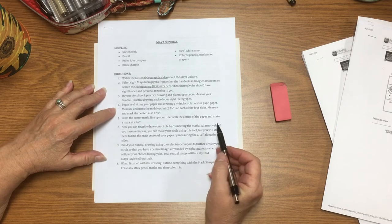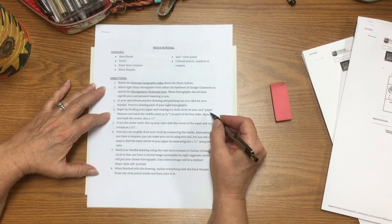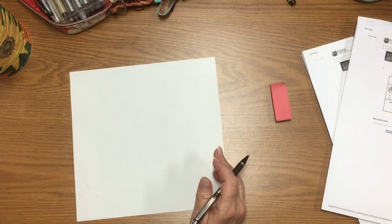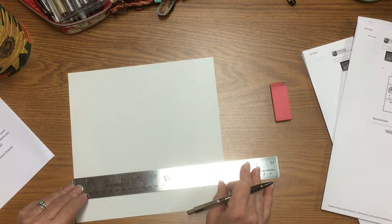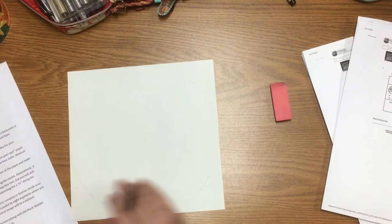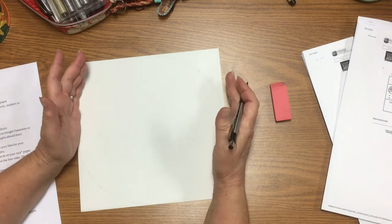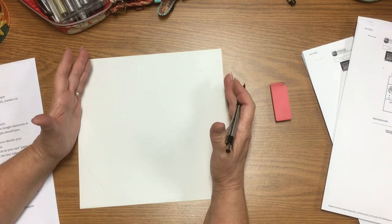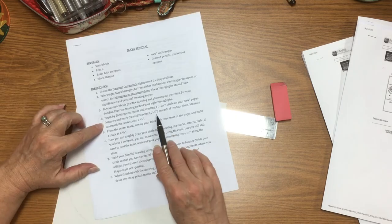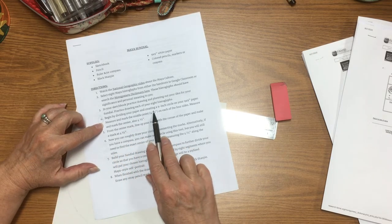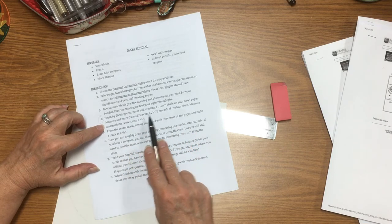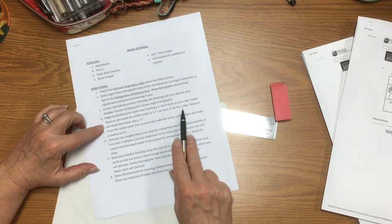The next part I want to do is get my paper ready. Now if you have paper, you can trim it to where it is nine by nine and follow along with my measurements. If you don't have a paper that's quite nine by nine, just use what you have and do the best you can. If you have something circular like a large can that you can trace, that'll work. Otherwise, you're going to do what I have done. Following the directions, you want to begin by dividing your paper and creating a nine-inch circle on your nine by nine paper. Measure and mark the middle point, which is four and a half inches on each of the four sides. Then measure and mark the center, which is also going to be four and a half inches.